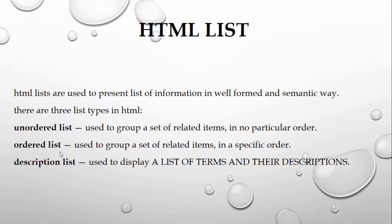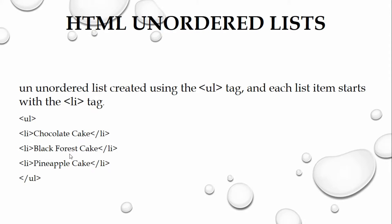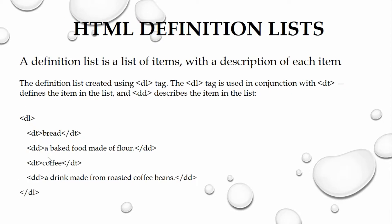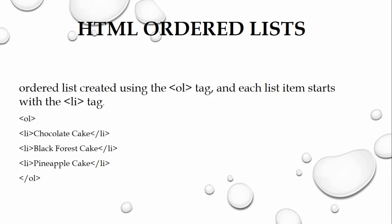An unordered list is created using the UL tag — UL stands for unordered list — and each list item starts with an LI tag. An ordered list is created using the OL tag — OL stands for ordered list — and each list item also starts with an LI tag.